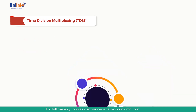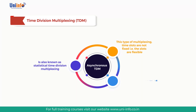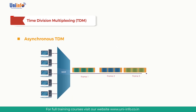Next is Asynchronous TDM, also known as statistical time division multiplexing. In this type of multiplexing, time slots are not fixed — the slots are flexible. The total speed of input lines can be greater than the capacity of the path. In synchronous TDM, if we have n input lines, there are n slots in one frame. But in asynchronous TDM, if we have n input lines, the frame contains not more than m slots, with m less than n. The number of time slots in a frame is based on a statistical analysis of the number of input lines.